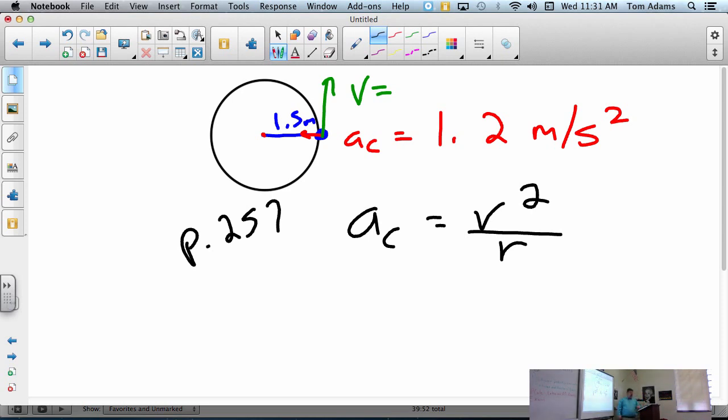Now solve. Do we have what I need to solve? Yeah, I do, because my centripetal acceleration is 1.2 meters per second squared, which is equal to v squared, which we don't know yet. And then what's the radius of the circle? 1.5 meters. So, now what do I do to solve?